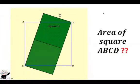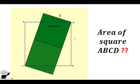Hello, welcome to my YouTube channel. Let's consider this question: we have a square ABCD, and inside it we have two smaller squares. The length of each smaller square is 2. We are supposed to find the area of the square ABCD — that is, the area of the bigger square.